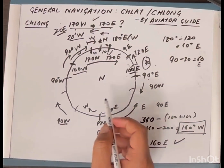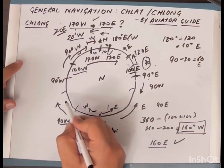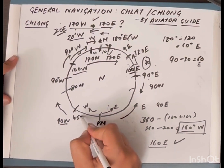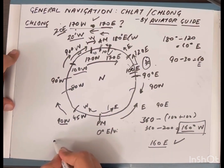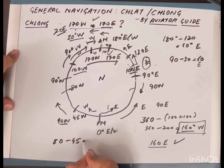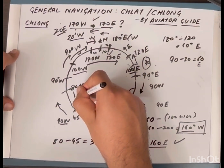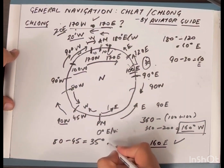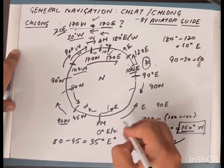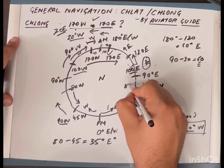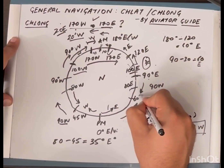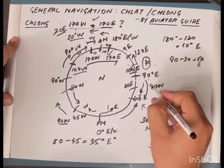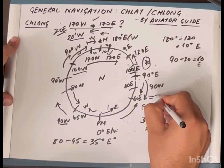Another example: ch-long between 80 West and 45 West. The change is 80 minus 45 equals 35 degrees. Traveling from 80 West to 45 West, we are moving eastward, so the ch-long is 35 degrees East. Similarly, ch-long between 80 East and 60 East: traveling from 80 East to 60 East is westerly, so 80 minus 60 equals 20 degrees West.